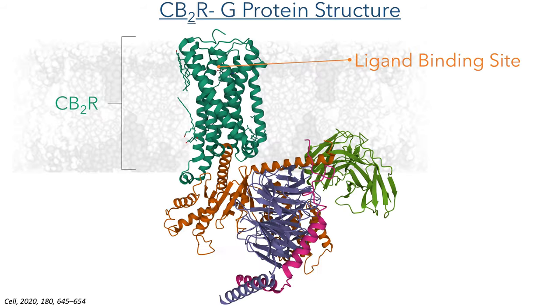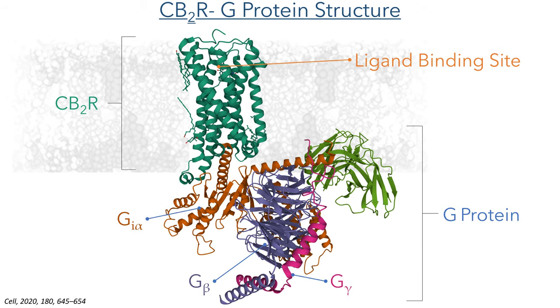Let's look at the structure and function of the CB2 receptor, which is the focus of this study. The CB2R is a G protein-coupled receptor, a large and very important class of receptor commonly referred to as GPCRs. These are targeted by over 30% of all FDA approved drugs on the market today. They share a common structure of a receptor embedded in the cell membrane with seven transmembrane helices, and the binding site is typically found in the middle of the channel formed by this collection of helices.